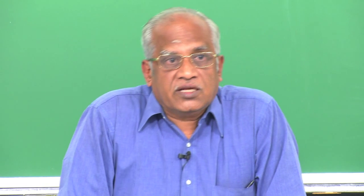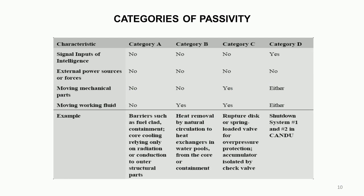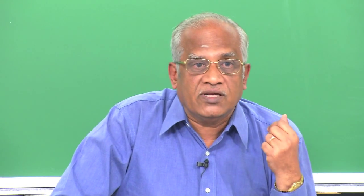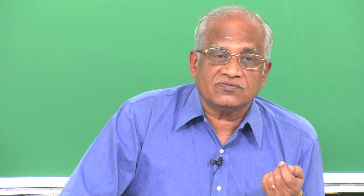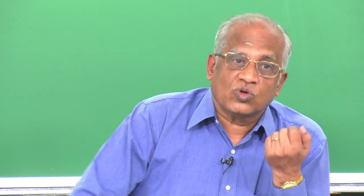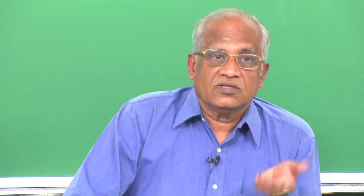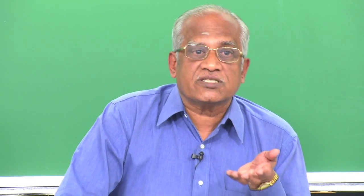In Category C there is a moving working fluid and also moving mechanical parts. Examples include a spring-loaded safety valve, a rupture disc for over-power protection, an accumulator, or a gravity tank kept at a very high level with a check valve. The check valve involves mechanical movement — that is another type of degree of passivity, Category C.